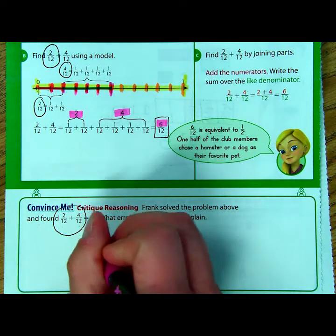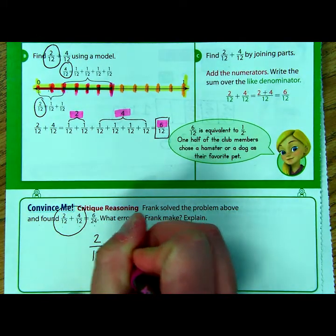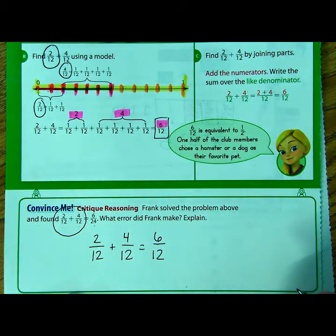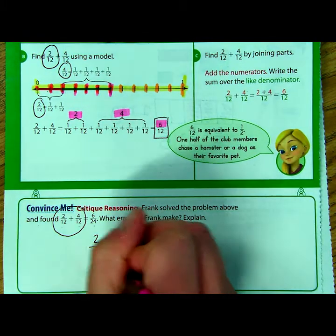Therefore, two twelfths plus four twelfths would be exactly what we just said. Six twelfths, not six twenty-fourths. You do not add these two together. No.